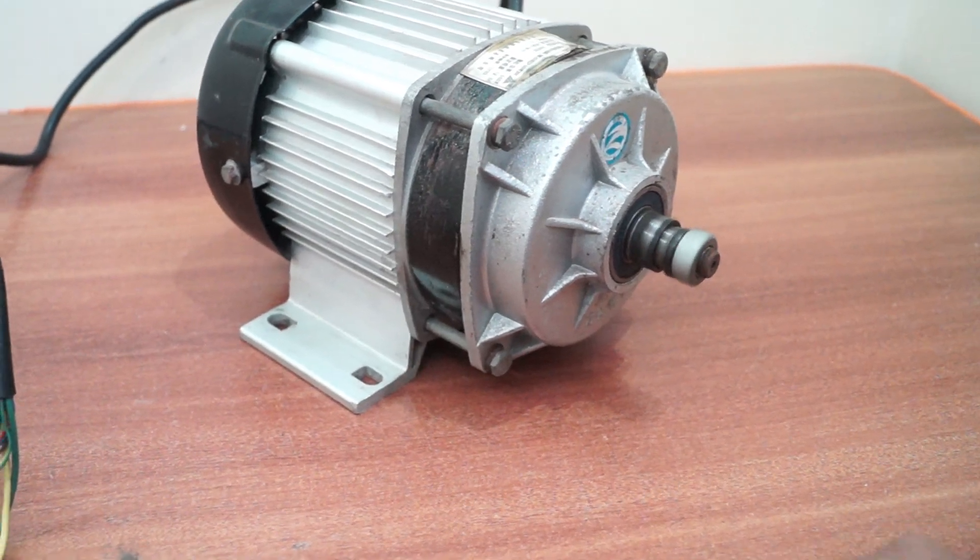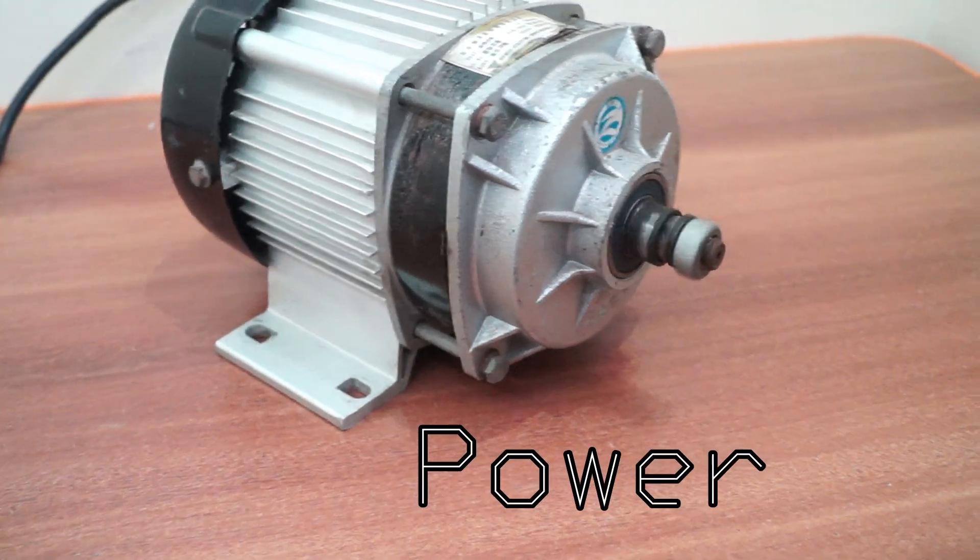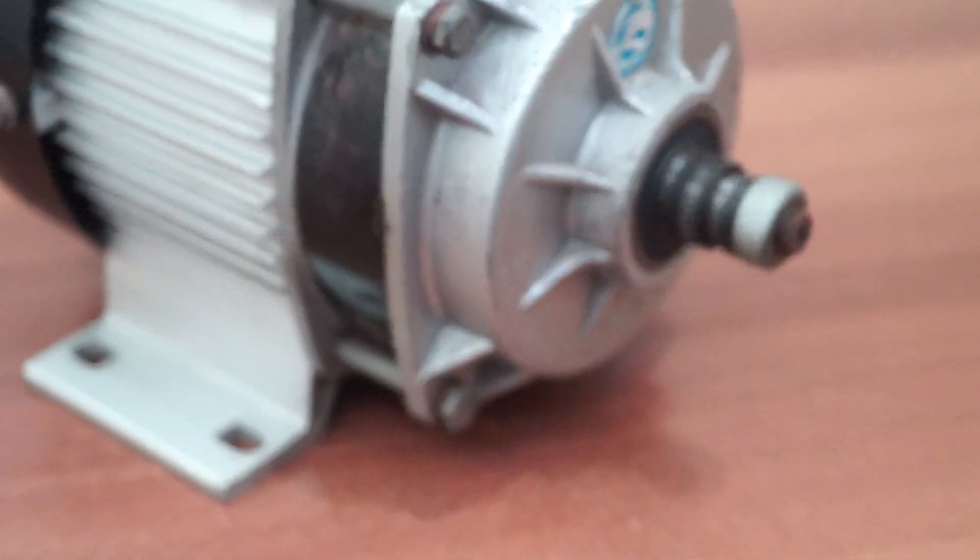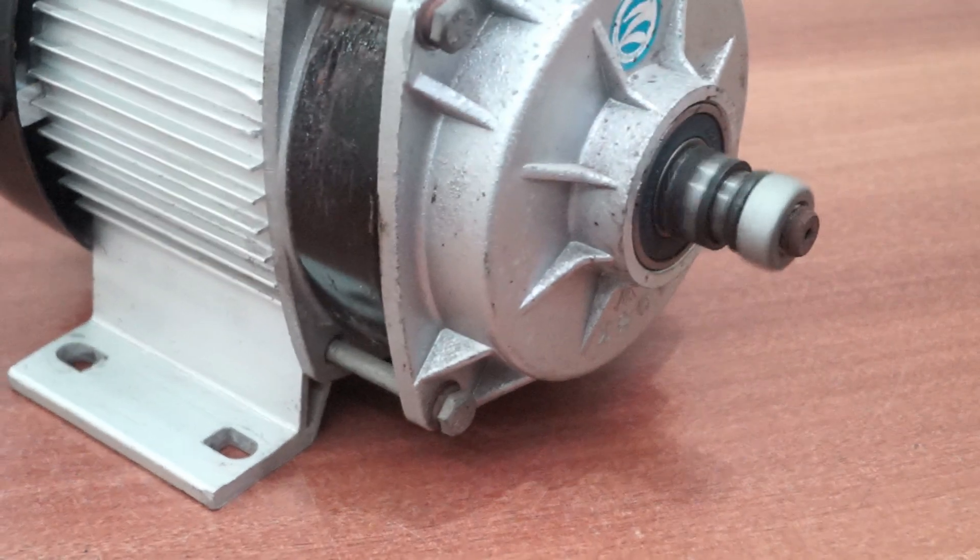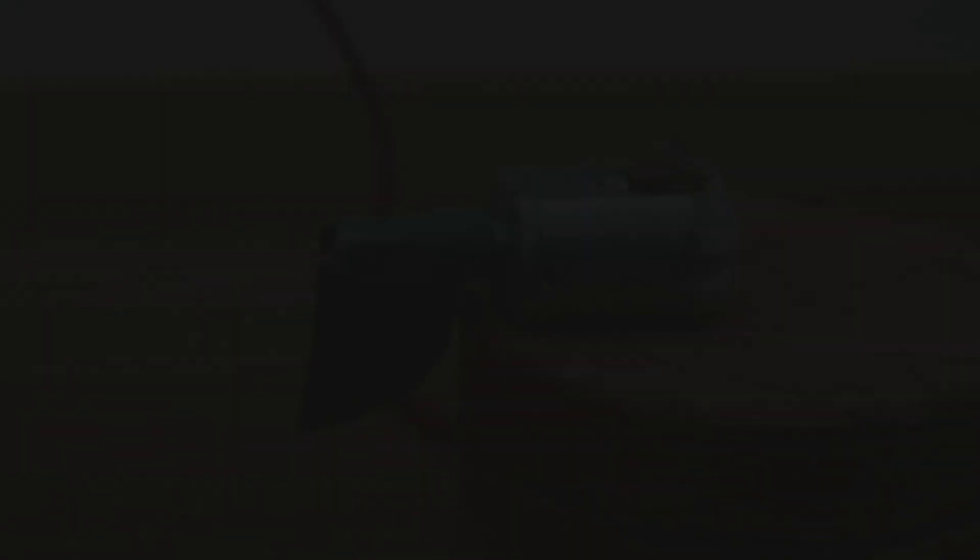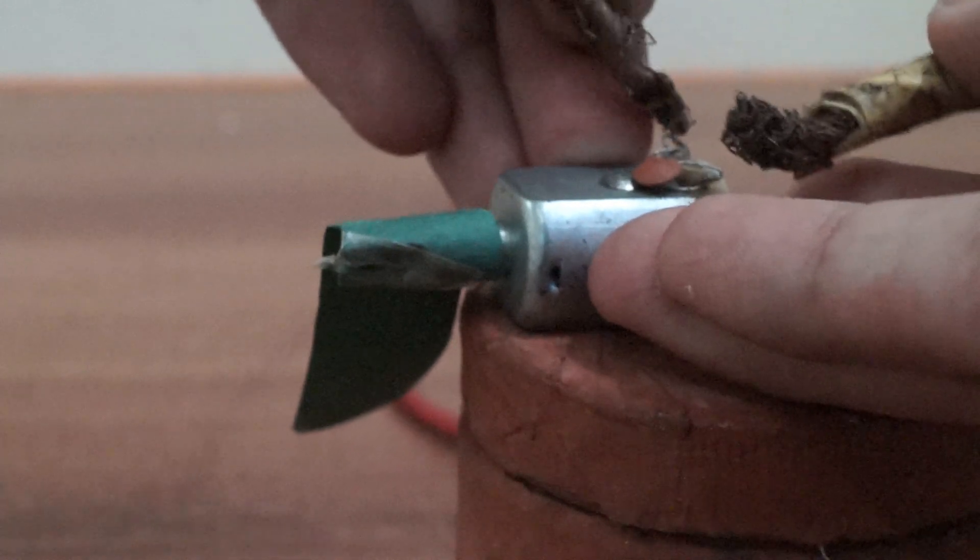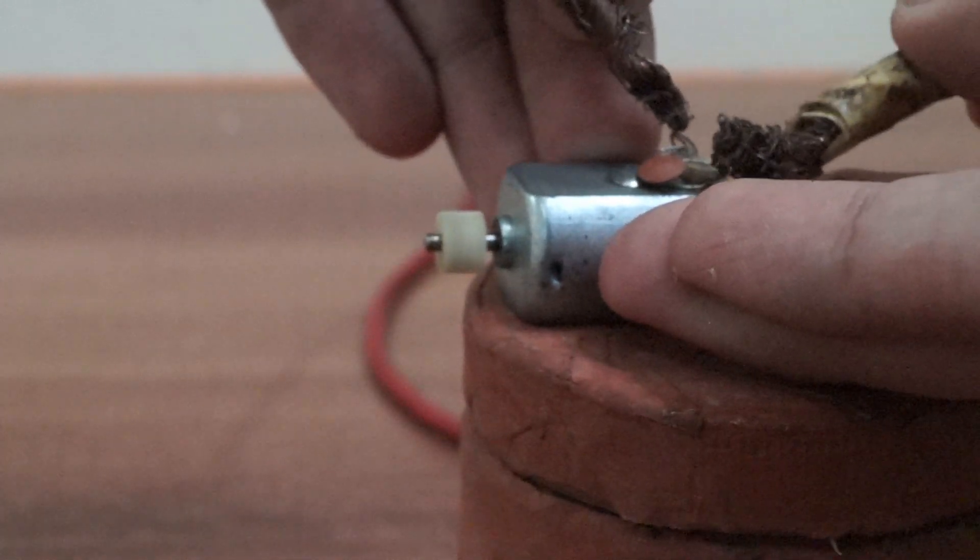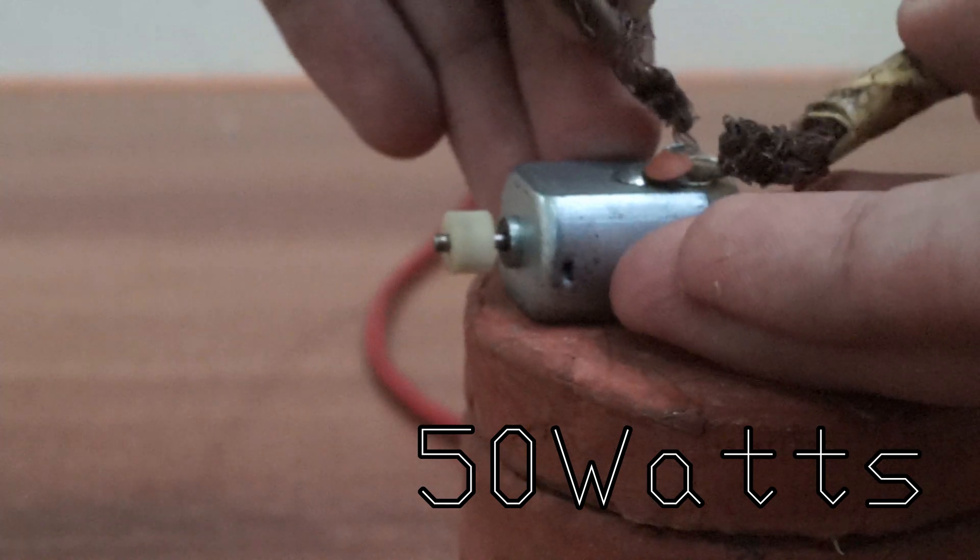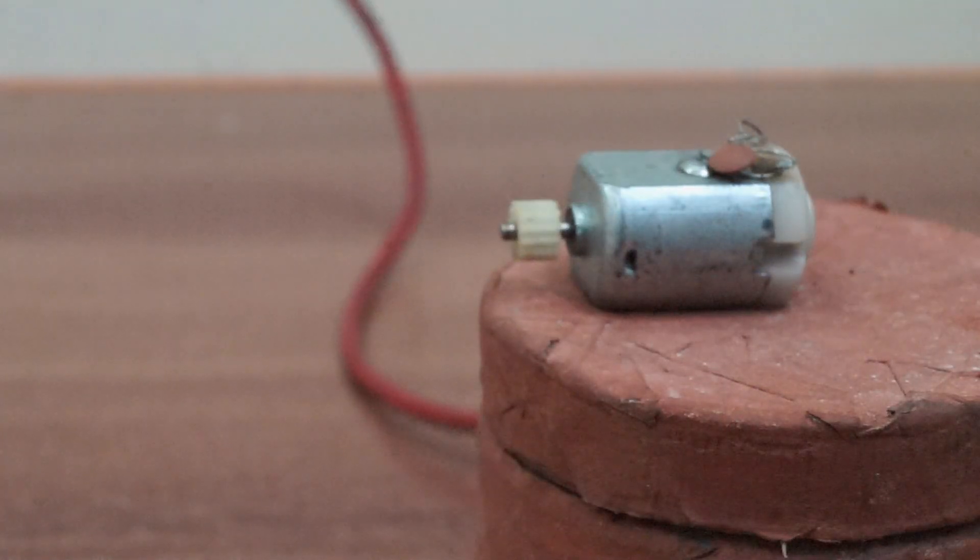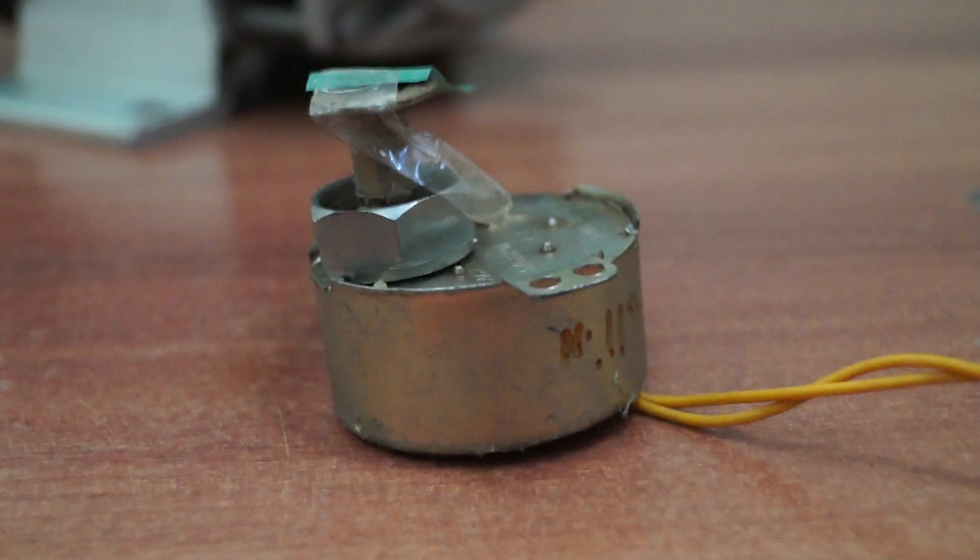Another factor for selecting a motor is power. Depending upon how you would power your motor in your application, you should select a motor. Suppose if you are going for a battery to power your application, it is generally recommended to be under range of 50 watts of power. And when you are using AC mains, that is AC to DC converters or inverters, there is no limit.